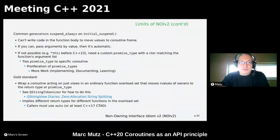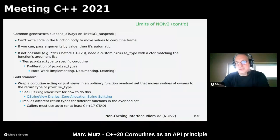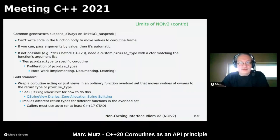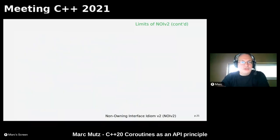The gold standard I've found is to wrap the coroutine — which acts only on views — in an ordinary function overload set that does all the conversion. If it receives an rvalue owner, it stores that into the generator or promise type, pinning its lifetime to the lifetime of the generator. Callers must receive the return value in an auto variable, or use C++17 class template argument deduction. See the QStringTokenizer implementation and my blog article for details.